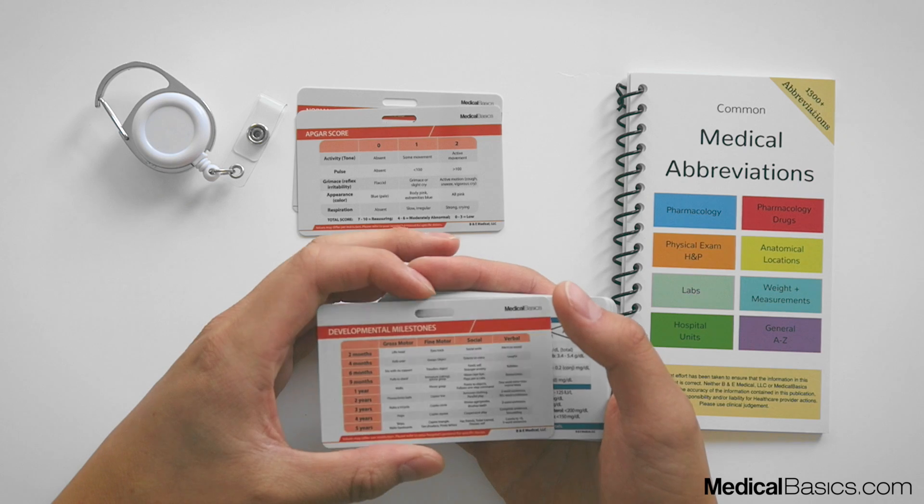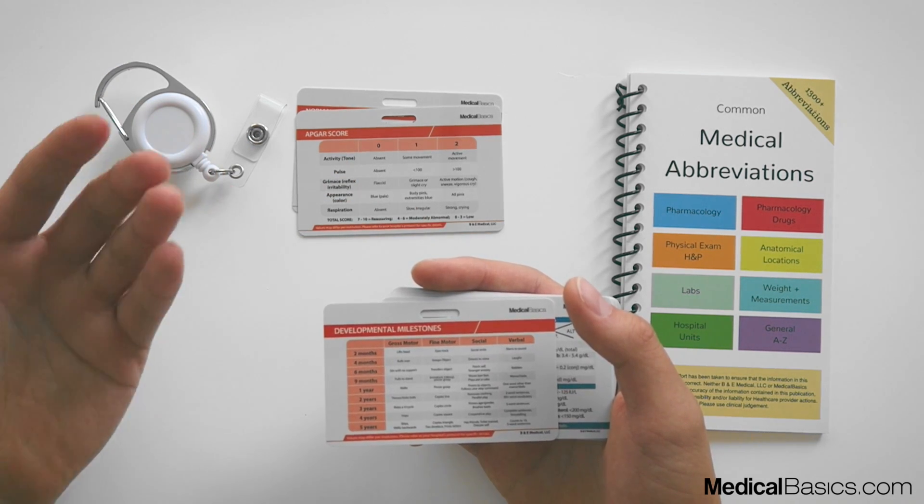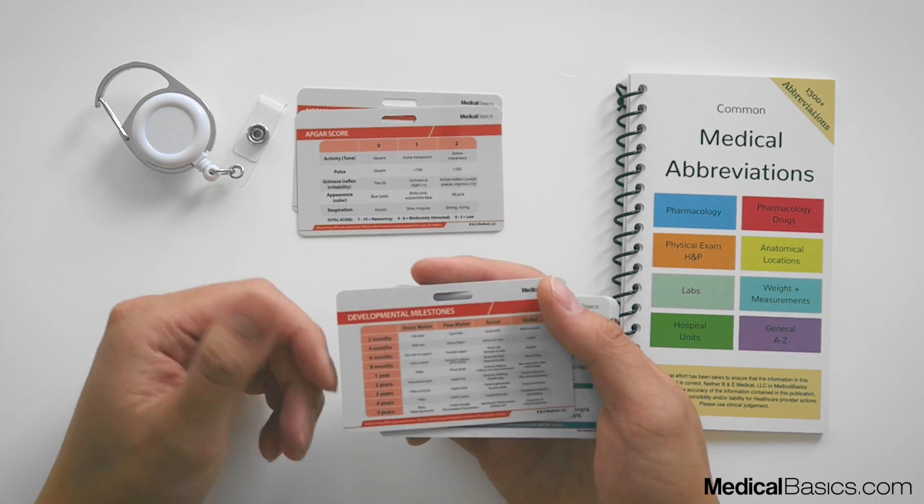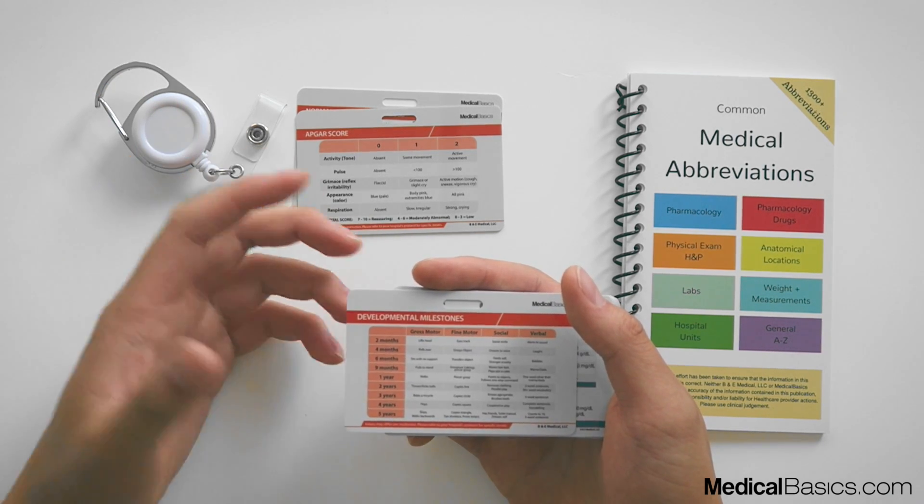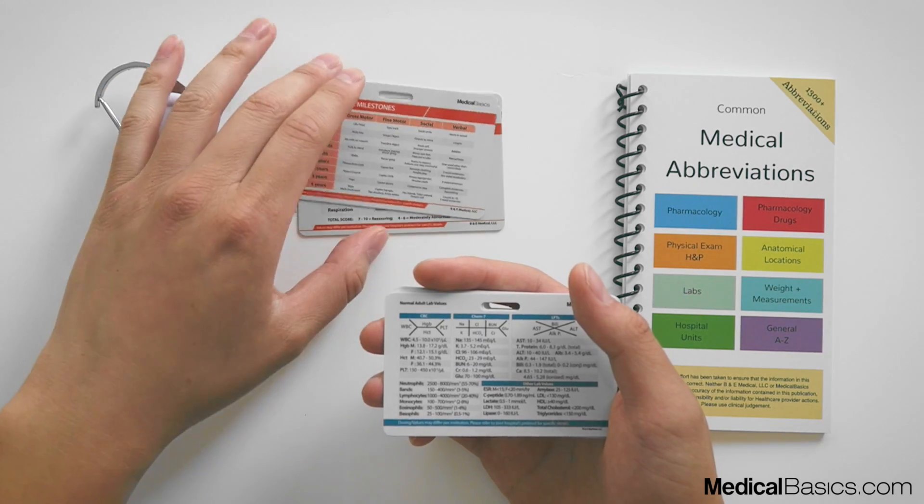And on the back we have our developmental milestones. So at 2, 4, 6, and 9 months, what should a baby be able to do? And then we kind of broke it down based off of up to five years.